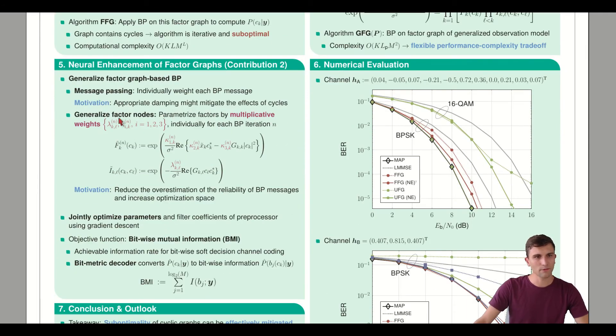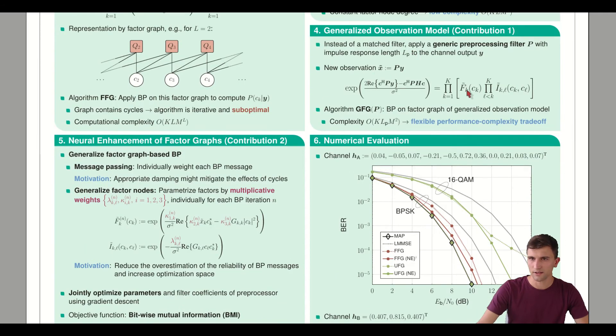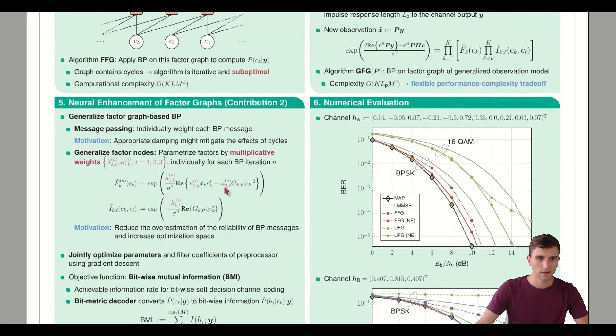The second thing we generalize are the factor nodes themselves. Here are the factors of the generalized observation model F tilde and E tilde. The purple factors are artificially included within these factors and will be optimized. The motivation is that by introducing more parameters, we have an increased optimization space, so we might find a better solution.